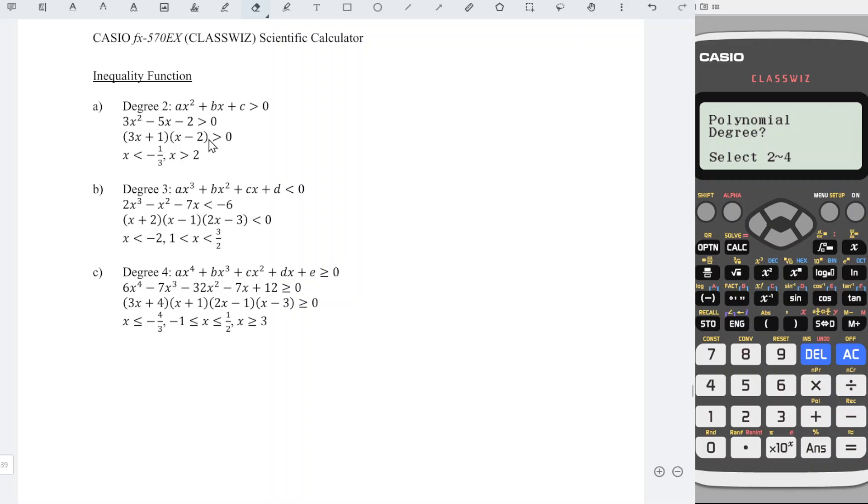For this case it's more than, so we choose 1, and enter the coefficients accordingly: 3x² minus 5x minus 2 more than 0.